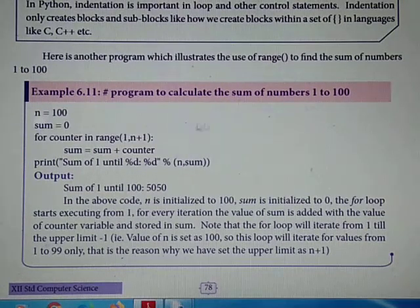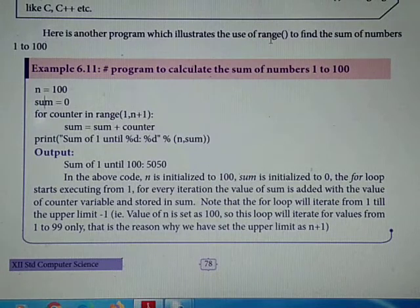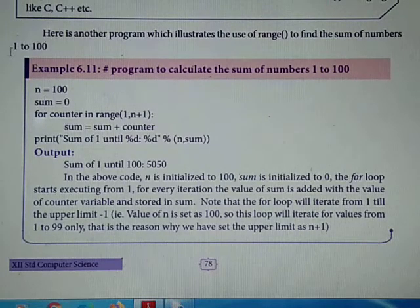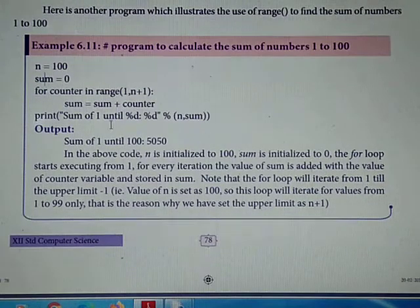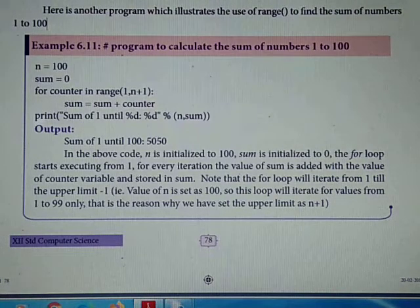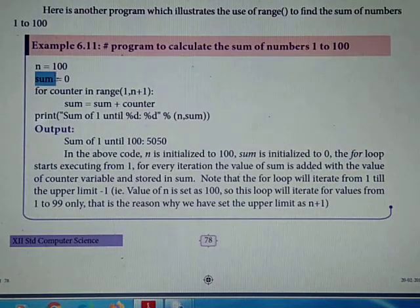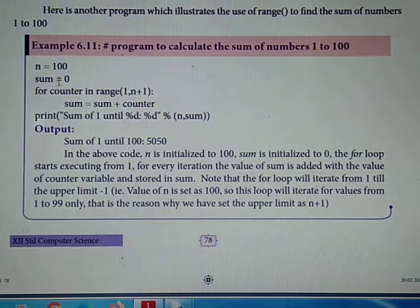Now we're going to see another example for the for loop. Here is another program which illustrates the use of range to find the sum of numbers 1 to 100. Range means sequence number - start value, stop value, and step value we can give. We're going to add all numbers from 1 to 100 and find what the sum is. For this program we use for loop because we know the upper limit is 100. Sum is initialized to 0.